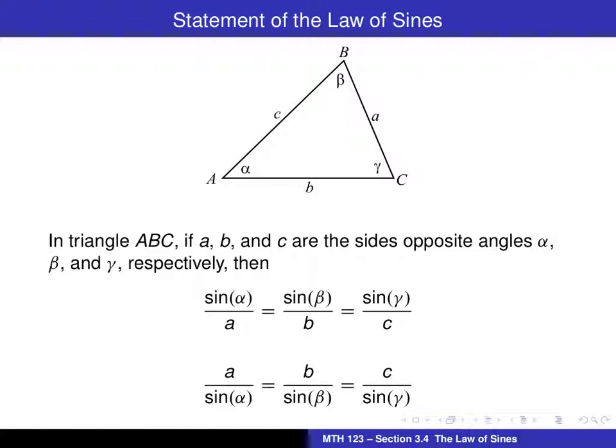Here's a statement of the law of sines. Notice we're using our standard notation for a triangle in which the vertices are capital letters A, B, and C. The corresponding angles are alpha, beta, and gamma. The side opposite angle alpha is side a, the one opposite angle beta is b, and the one opposite angle gamma is c. This can seem like an awful lot to memorize, including having to memorize how the triangle is set up.